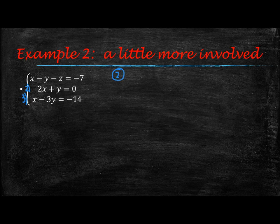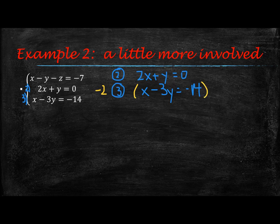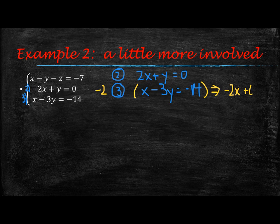So equation 2 is 2x plus y equals 0, and equation 3 is x minus 3y equals negative 14. In order to solve this, we would need to use elimination to eliminate one of our variables. If I take the third equation and multiply it by a negative 2, I will now have negative 2x, negative 2 times negative 3y is a positive 6y, and it's equal to negative 2 times negative 14, which is positive 28.